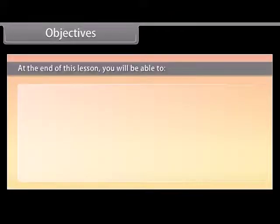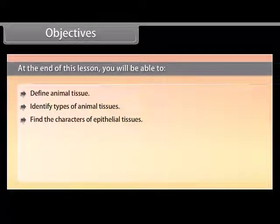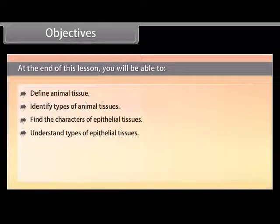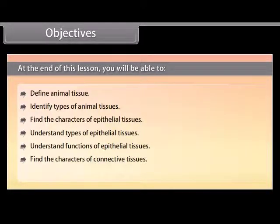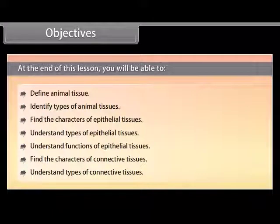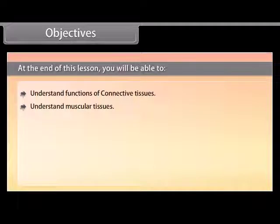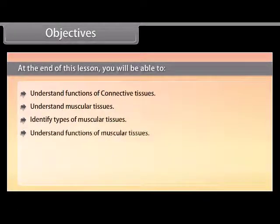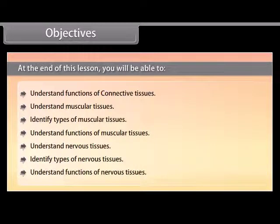At the end of this lesson, you will be able to: define animal tissue; identify types of animal tissues; find the characters of epithelial tissues; understand types and functions of epithelial tissues; find the characters of connective tissues; understand types and functions of connective tissues; understand muscular tissues, their types and functions; and understand nervous tissues, identify types of nervous tissues, and understand their functions.